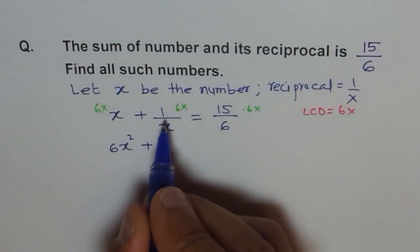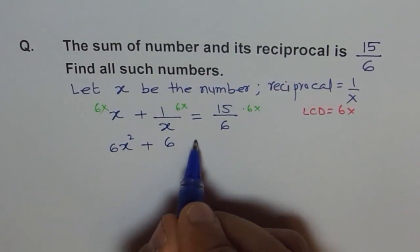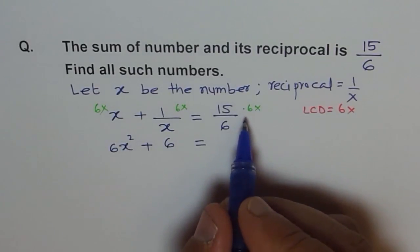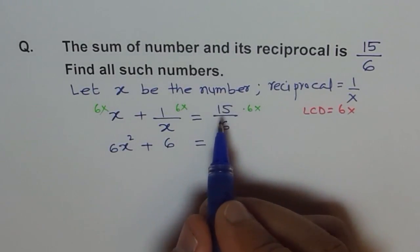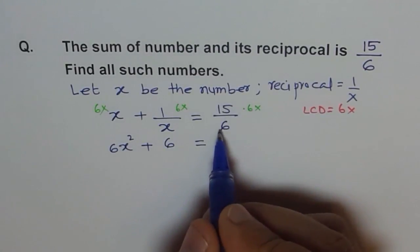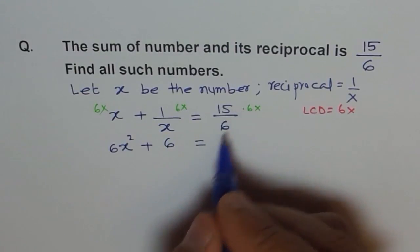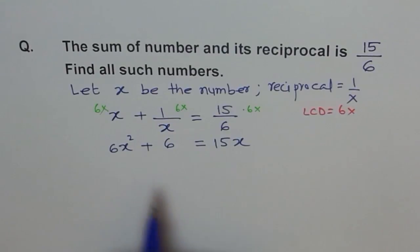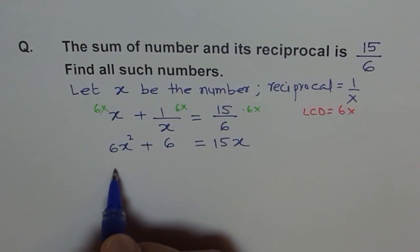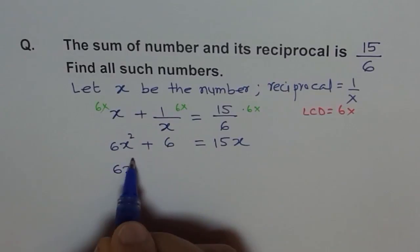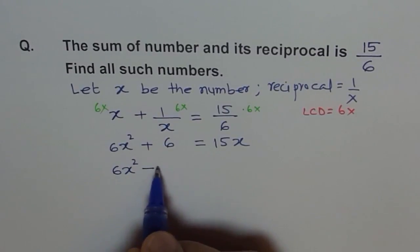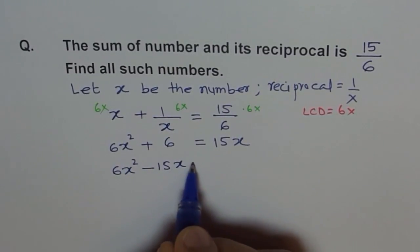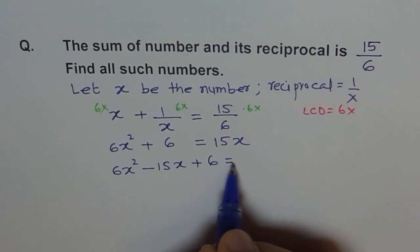Plus, x will cancel and we are left with the number 6 here. And here we are left with 15 times 6. Oh, 6 and 6 will cancel, 15 times x. 6 and 6 will cancel out and we are left with 15 times x. So we have got a quadratic equation. It is easy to solve now. So we say 6x², we will bring it here, minus 15x plus 6 equals 0.